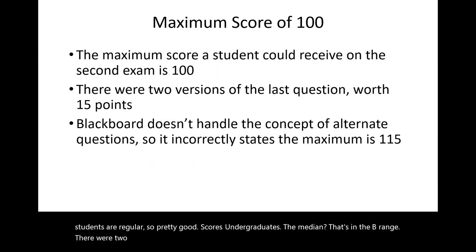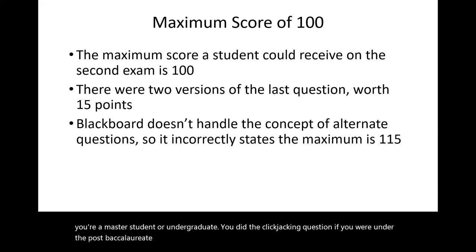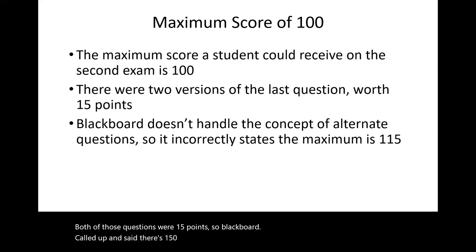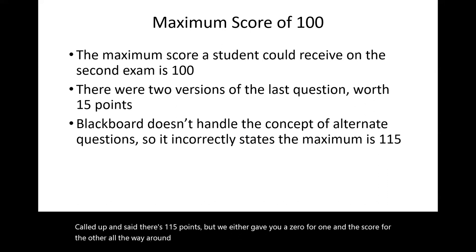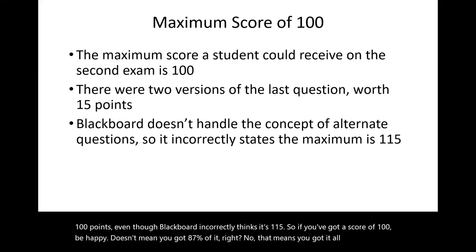There were two versions of the last question. If you were a master's student or undergraduate, you did the clickjacking question. If you were in the post-baccalaureate cybersecurity certificate program, you did the cookie modification question. Both questions were 15 points. Blackboard counted up to 115 points, but we gave you a zero for the question you weren't assigned, so the maximum score is 100 points, not 115.